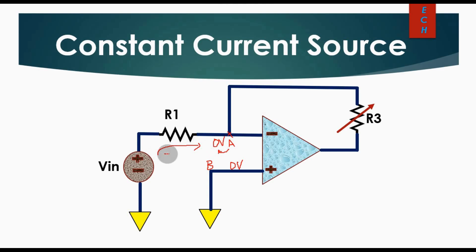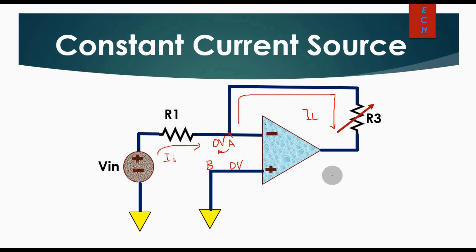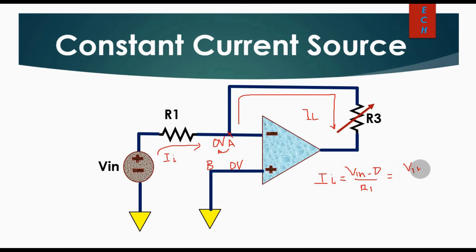Let us assume the current flowing through R1 is II, and the current flowing through the load resistance is IL. To find the current II, it equals VIN minus zero volts divided by R1 — that is, II = VIN / R1.